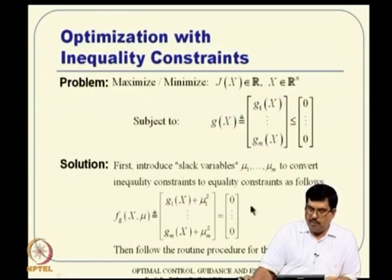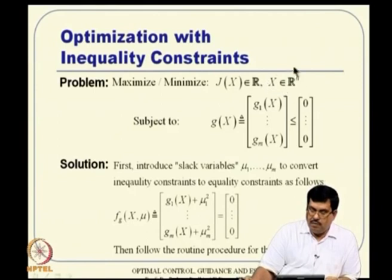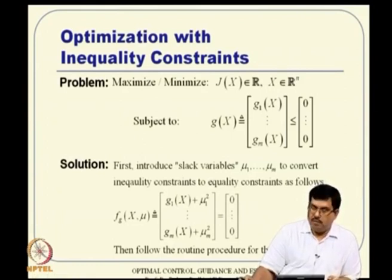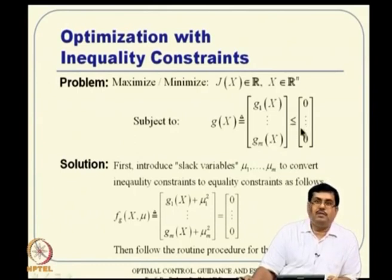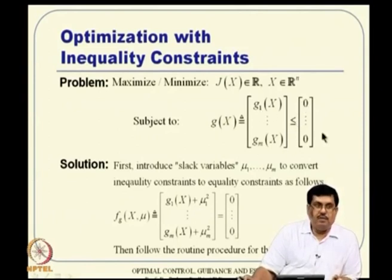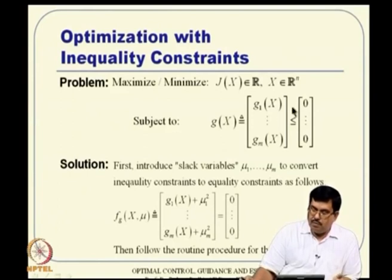The problem definition: minimize or maximize J(x), where the cost function is always a scalar but the decision variables can be n-dimensional — you have n free variables to choose from. This objective function is subject to constraints g₁ to gₘ ≤ 0. Note that this embeds the equality constraint, because if g equals 0 it also satisfies the inequality. So what we discussed in the previous lecture with equality constraints is a special case embedded here; in general, some equations may be equality constraints while the rest are strict inequalities.